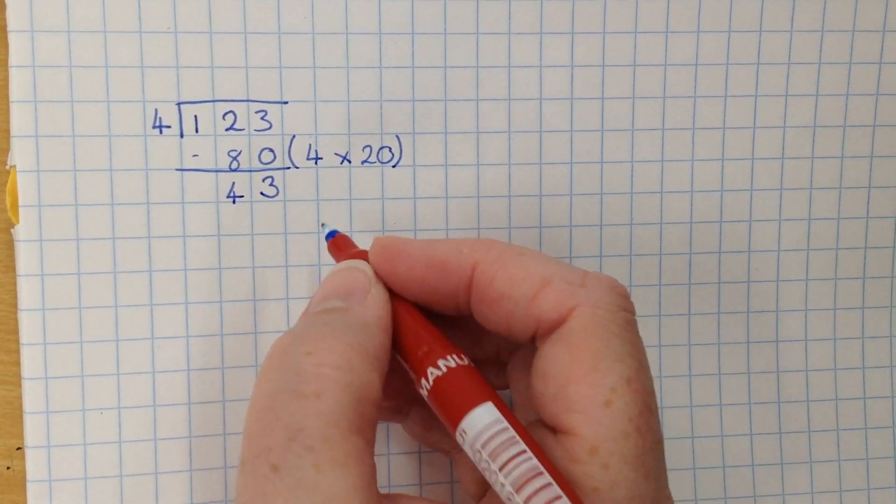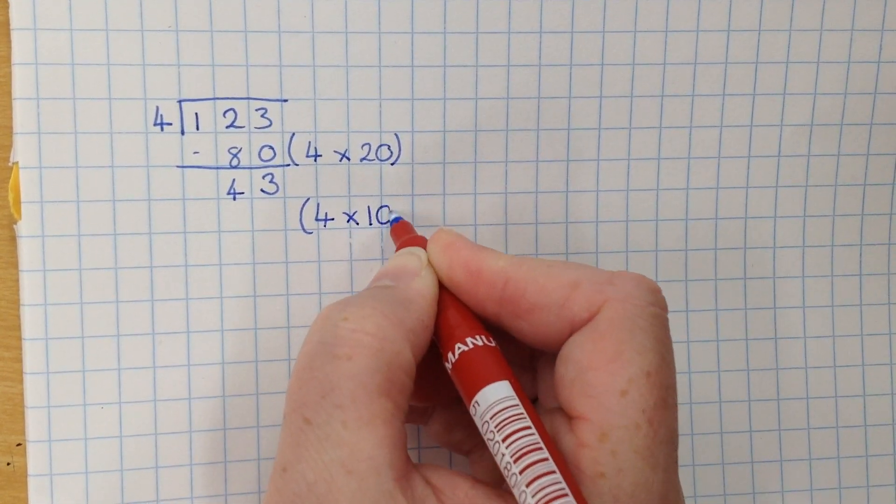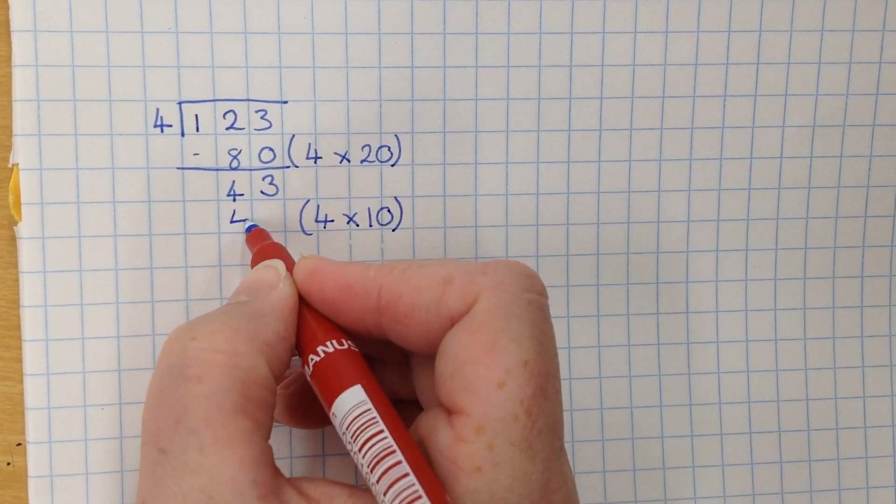Now we can't take 80 away again. So we're going to need a smaller number this time. So we're going to do 4 times 10, which is 40.